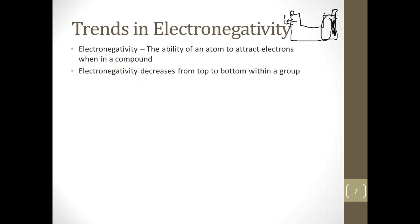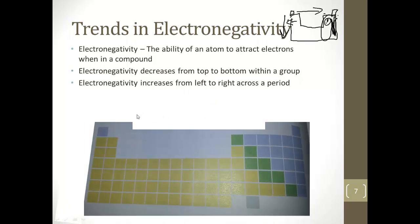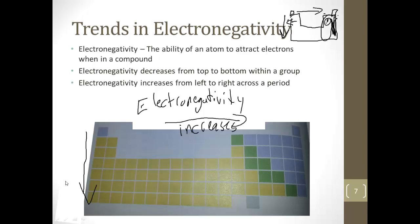So electronegativity decreases from top to bottom within a group. As you go down the group, it's less electronegative. It doesn't want electrons so badly. But electronegativity increases from left to right across the period. Because these guys aren't very electronegative, but these are because they really want electrons. So electronegativity increases from left to right and decreases from top to bottom. So as you go down in the group, the electronegativity decreases.